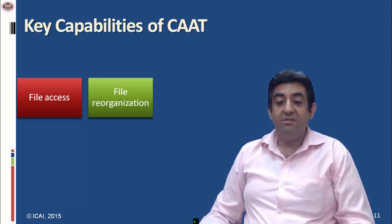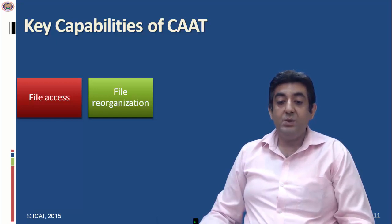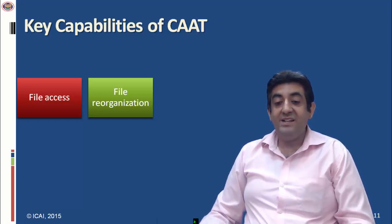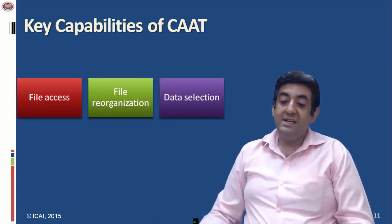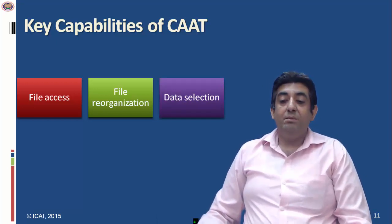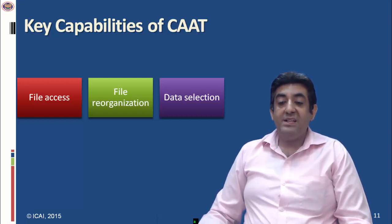The next capability is file reorganization. If an auditor wishes to see an instant view of the data, with the help of linking, merging, indexing, and sorting, they can perform the file reorganization capability. Third is data selection, which simply means one can apply filtering criteria for the selection of data.